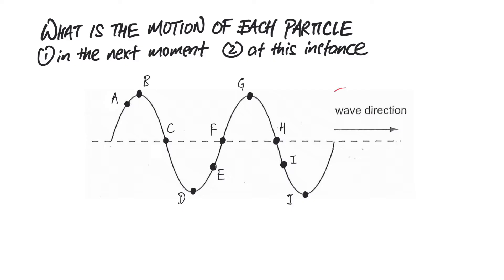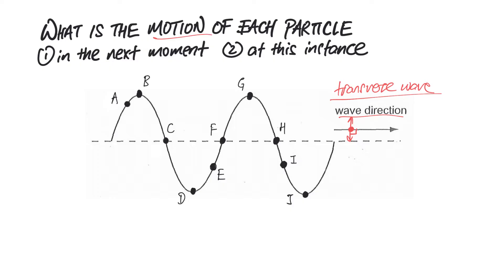Firstly, you're expected to know that this is a transverse wave, and you can treat it just like a water wave where all the particles are like floating objects — like a coconut floating on water, or a rope wave. It's given that the direction of the wave is to the right. Since this is a transverse wave, the direction of vibration of the particle is either up or down, perpendicular to the direction of the wave — so the motion will never be left or right.